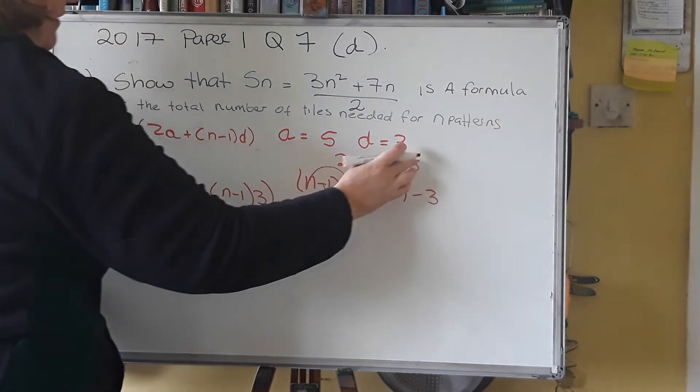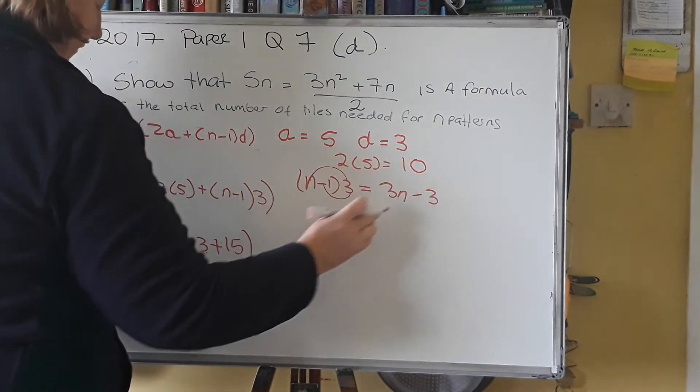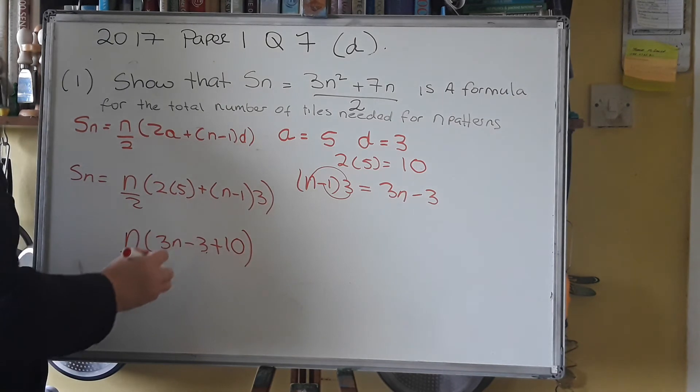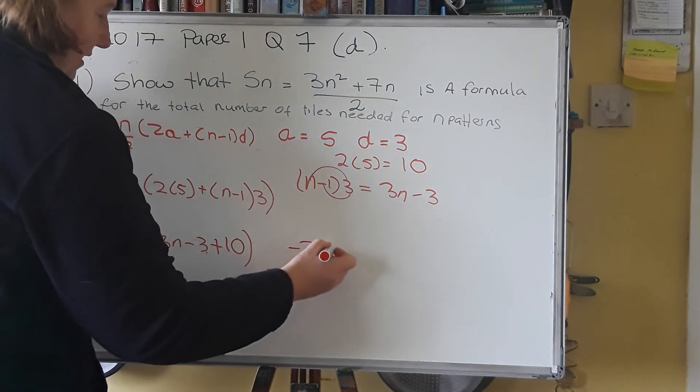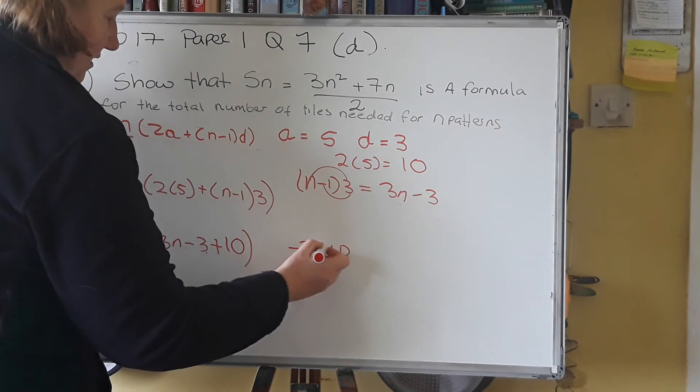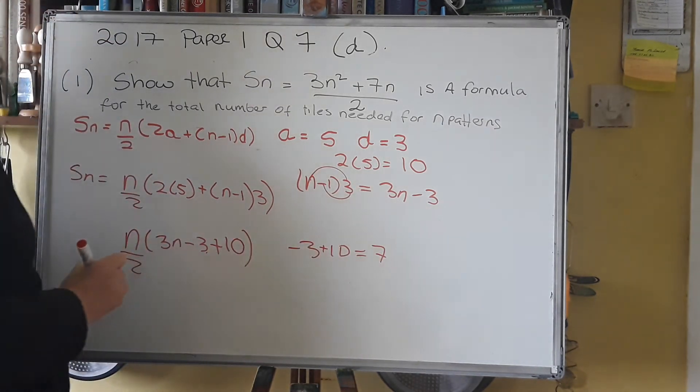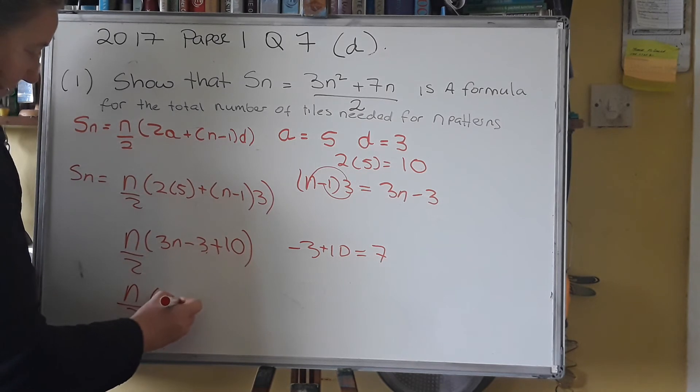So I just corrected that, 2 by 5 equals 10 not 15. Let's try that again. So minus 3 plus 10 gives you 7. Because basically 10 take away 3. So now you have n over 2 by 3n plus 7.